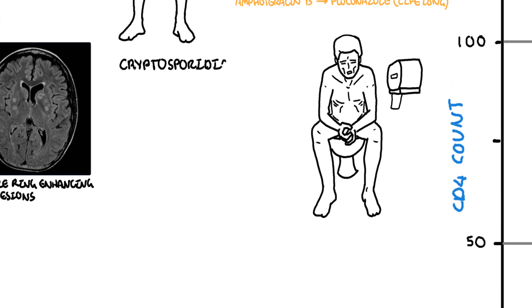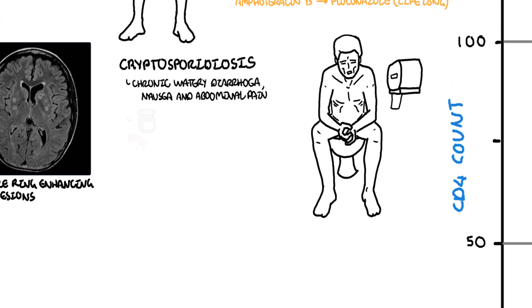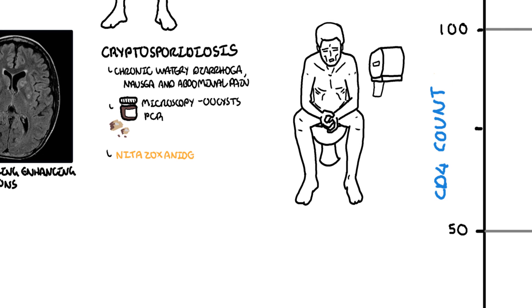Cryptosporidiosis is caused by Cryptosporidium, which causes chronic watery diarrhea with nausea and abdominal pains. It is typically diagnosed with evidence of cysts in the stool or by PCR. Medications include antiparasitic therapy using nitazoxanide. Herpes simplex virus is also an AIDS defining condition, usually manifesting as chronic ulcers, esophagitis, or pneumonitis. Treatment involves antiviral therapy — acyclovir or valacyclovir.